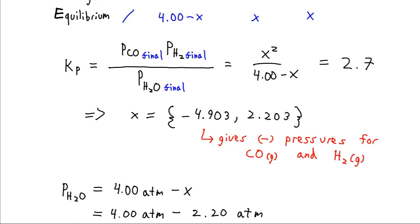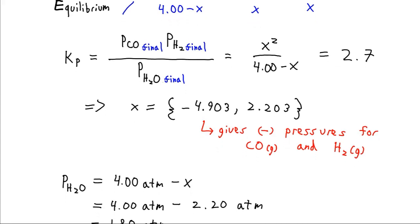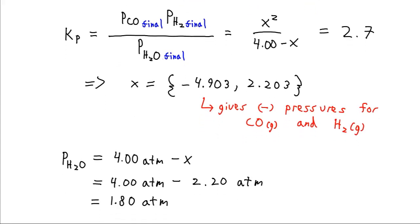So we can go ahead and plug that in to our equilibrium value. 4 atmospheres minus a change of x, which is 2.2 atmospheres, gives us a final pressure for H2O of 1.8 atmospheres.